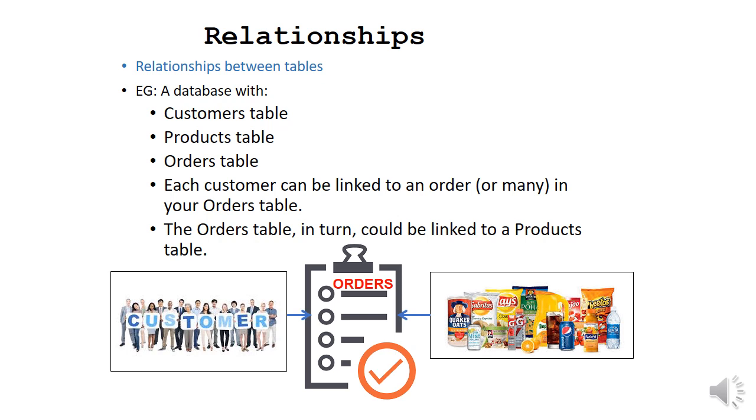We have relationships between the tables. So for example, we have a database with three tables: customers, products and orders table. Now each customer can be linked to an order or many orders in your orders table. And the orders table in turn will be linked to the products table. So you can see the relationships forming here between the tables.